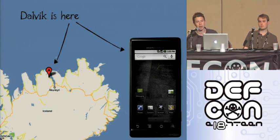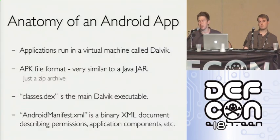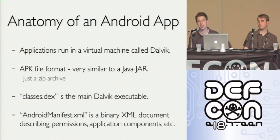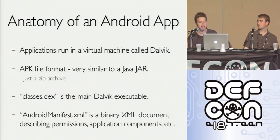Dalvik is not only a fishing village in Iceland — it's also the VM on Android, and it's actually pretty cool. It's similar to a JVM and really optimized for mobile. Application packages for Dalvik are called APKs, very similar to JARs — basically special zip files, so fairly easy to extract. The main executable is called classes.dex, and the other thing of interest is the Android Manifest: a binary-encoded XML document that describes the permissions of an application, its components, and so forth.